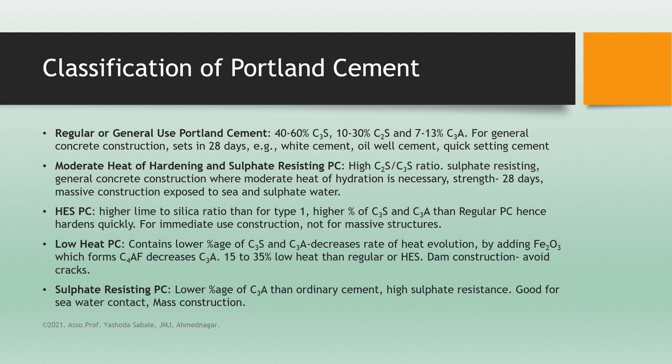There are five classes of Portland cement. The first one is regular or general use Portland cement. Its composition is 40 to 60% C3S, 10 to 30% C2S, and 7 to 13% C3A. This cement is used for general construction and concrete construction, which sets in 28 days. Examples include white cement, oil well cement, and quick setting cement.